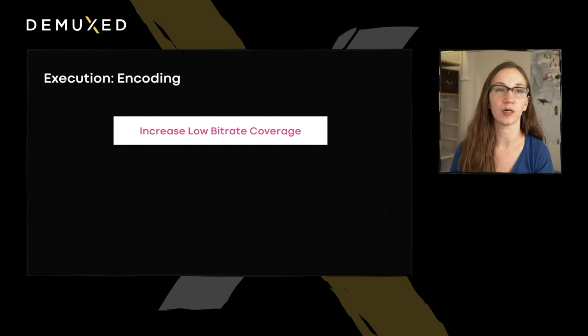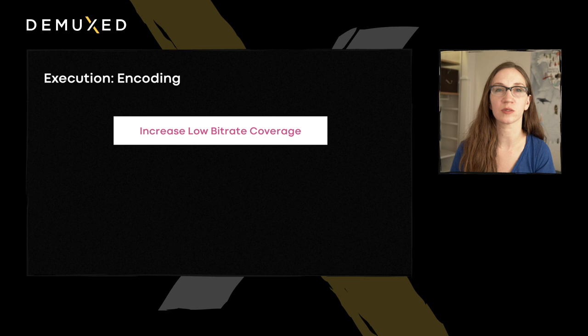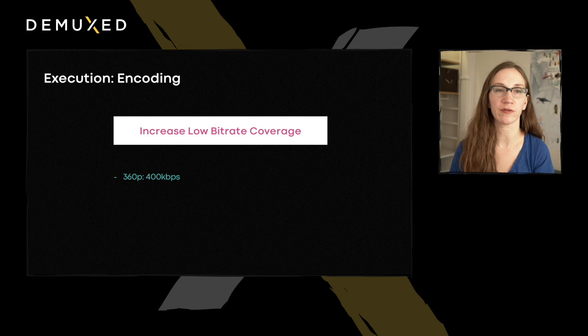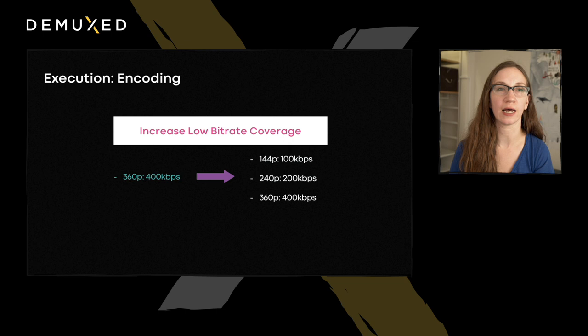On the encoding side, the first topic I'd like to cover is increasing low bitrate lanes — one of the areas identified in our root cause stall analysis. At Facebook, we ingest and encode a wide variety of content, from videos recorded on a cell phone to professionally produced music videos. There were scenarios where if the original bitrate on the ingested content was below 500kbps, we wouldn't always generate additional lower bitrate lanes. Our analysis showed that 500kbps wasn't low enough for some markets, so we increased coverage of bitrate lanes — previously a manifest might only have a lane at 400kbps, whereas now we'd also have lanes at 100kbps and 200kbps, making content more accessible for users on a variety of networks.